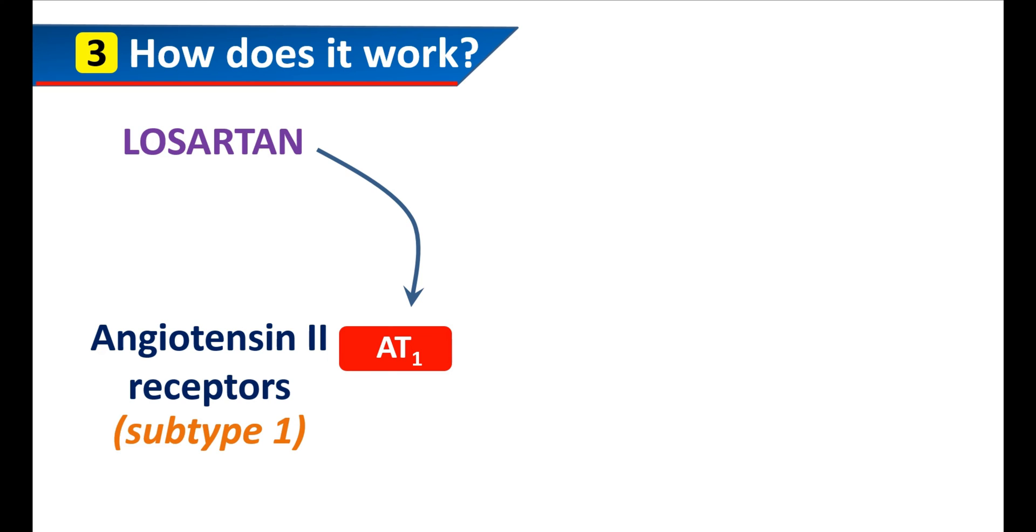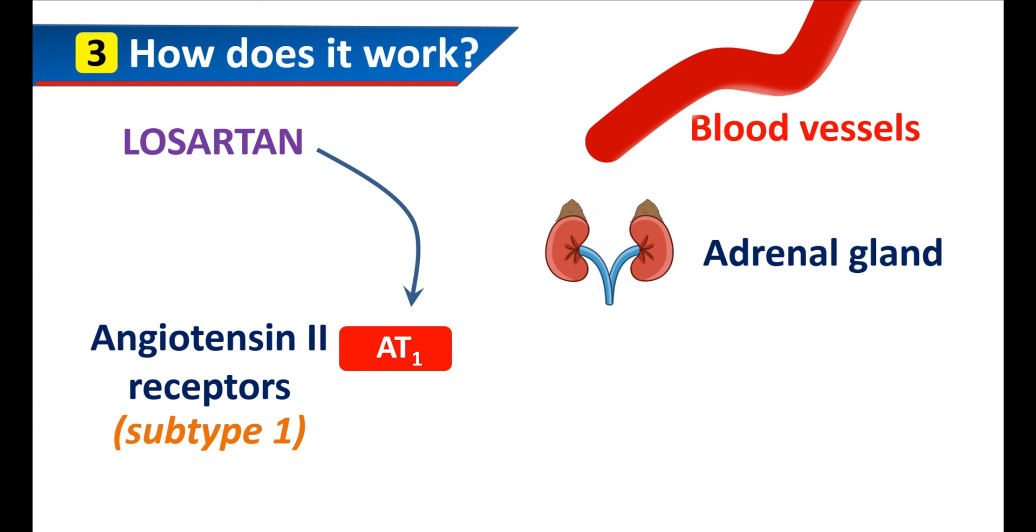These AT1 receptors are located at different targets like blood vessels, adrenal glands, and the heart. On the blood vessels, angiotensin 2 can produce vascular constriction by activating these receptors.